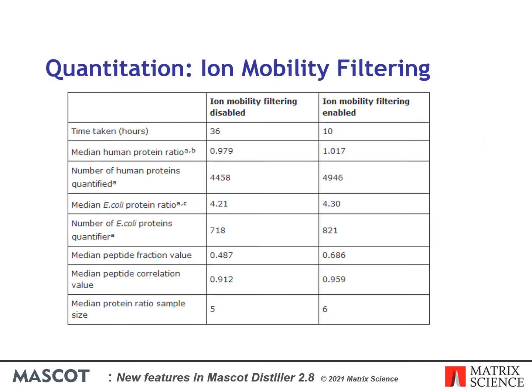We took four files representing two replicates from the dataset used in the original PASEF paper for TimsTOF. These samples consist of a background of HeLa sample at a ratio of 1:1 and a spiked-in E. coli protein digest with a reported median protein ratio of approximately 4.3. We then carried out quantitation on these samples with and without precursor ion mobility filtering enabled.